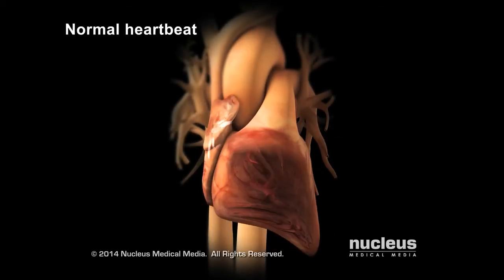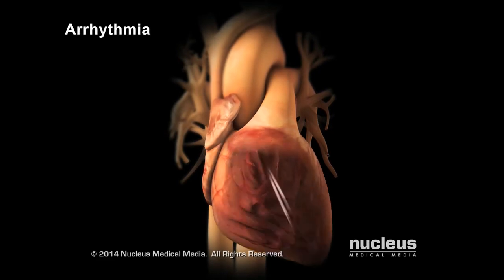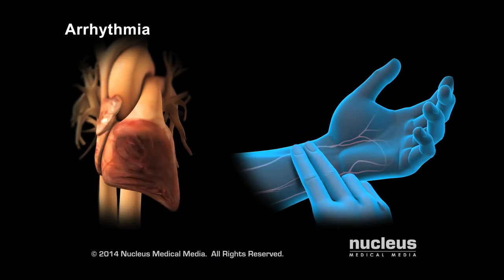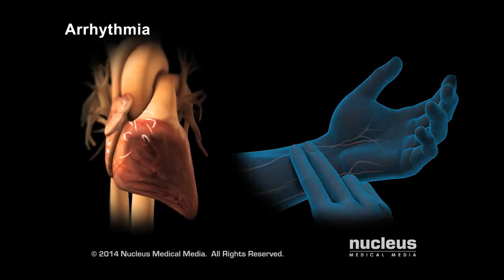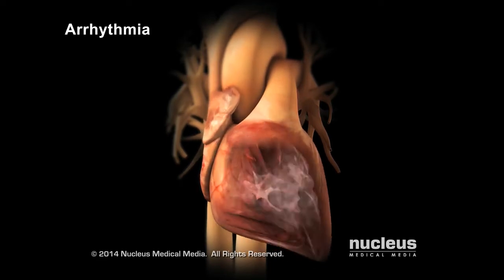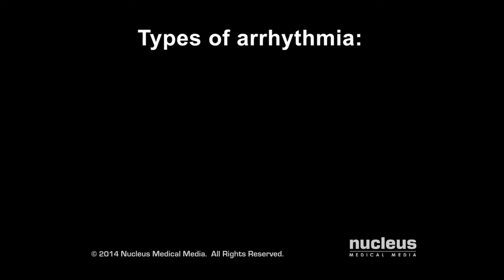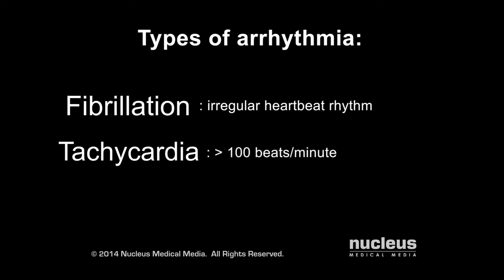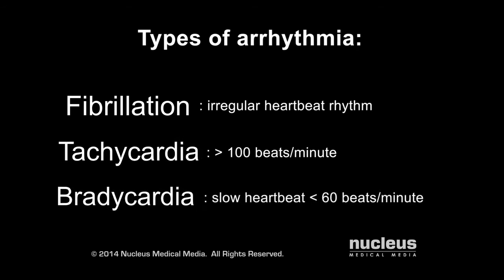Problems with the cardiac conduction system cause the heart to have an abnormal rhythm, called an arrhythmia. This may cause an irregular pulse. Arrhythmias may happen in the atria or ventricles. Types of arrhythmias include fibrillation, which is an irregular heartbeat rhythm; tachycardia, which is a fast heartbeat of more than 100 beats per minute; and bradycardia, which is a slow heartbeat of less than 60 beats per minute.